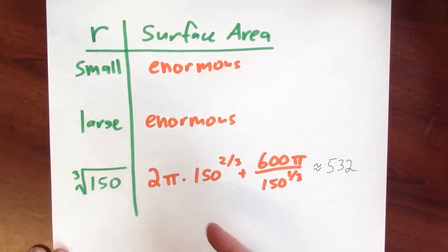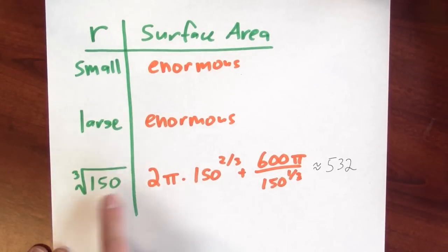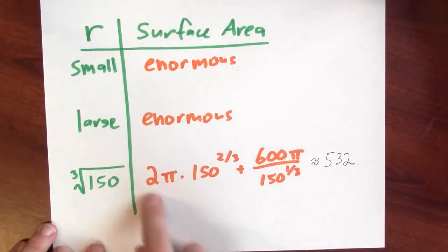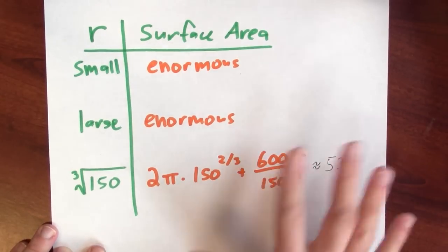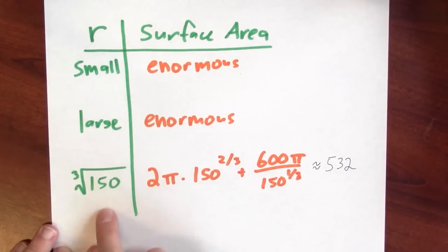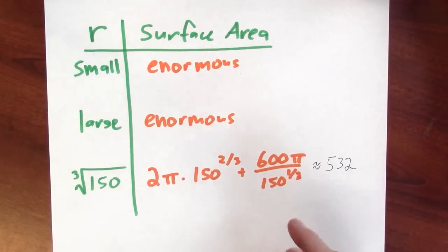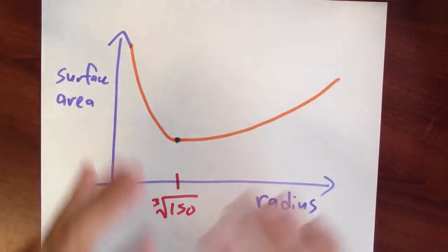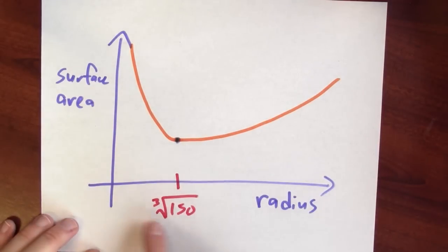So the only thing that really remains is this critical point. And if you plug this critical point into the original function, you get this as the resulting surface area. If you build your soup can with a radius of cube root of 150 centimeters and your height, whatever it has to be in order to guarantee that the soup can contains 300 pi cubic centimeters of soup. So how does this turn out? What's the best shape for a soup can? The best case for your soup can is to use a radius of the cube root of 150.